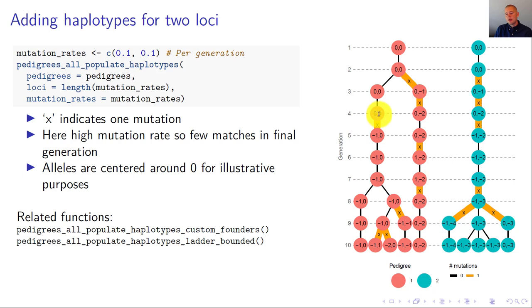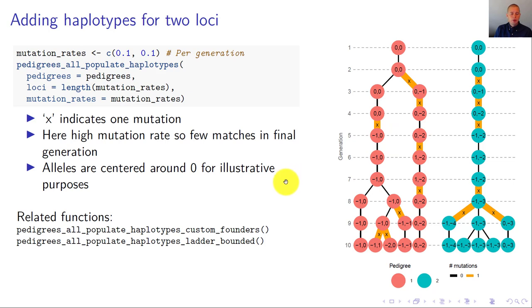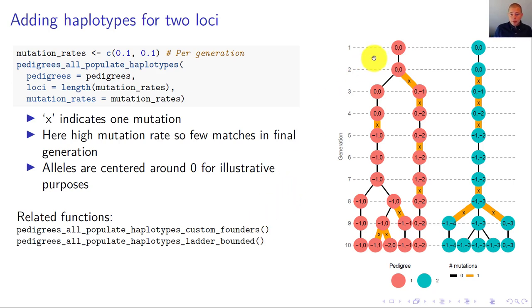With a high mutation rate, there are relatively few matches in the final generation and high variability in haplotypes. The alleles are centered around zero for illustrative purposes. The function pedigrees_all_populate_haplotypes gives founders haplotype 0,0 and continues downwards, but other options exist — you can provide a custom founder haplotype drawn from a database or generated randomly. There is also a bounded ladder option; the default ladder is unbounded.